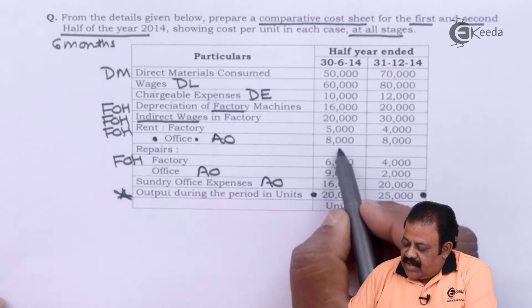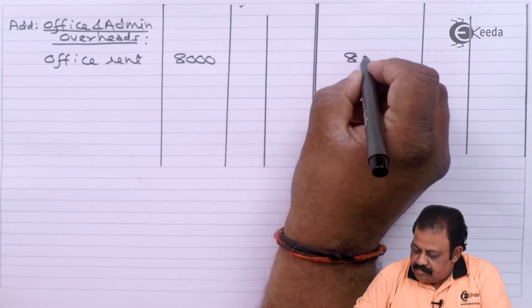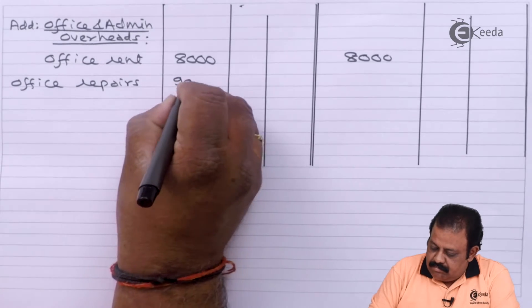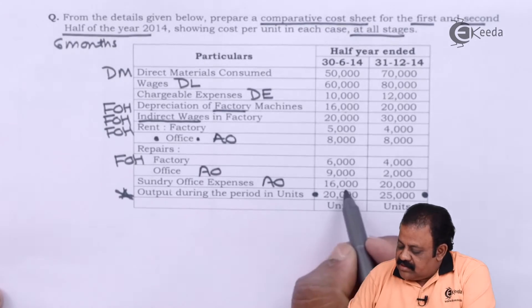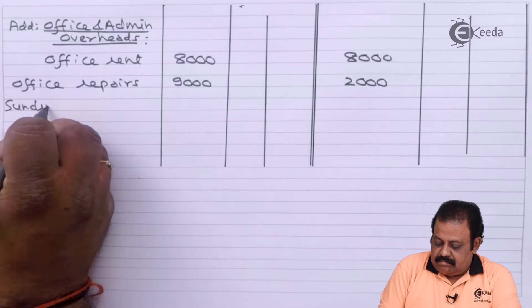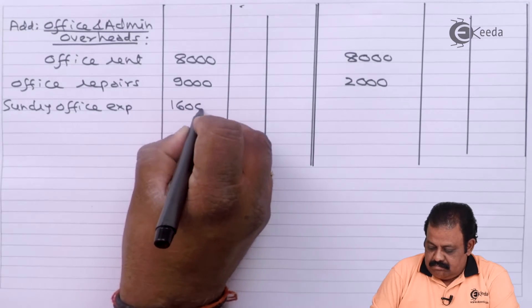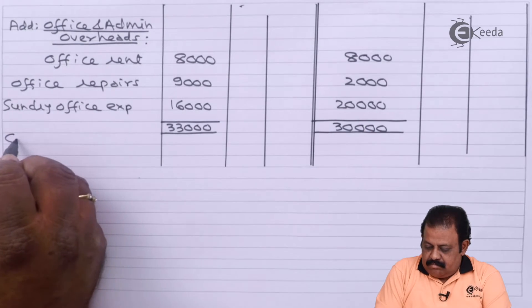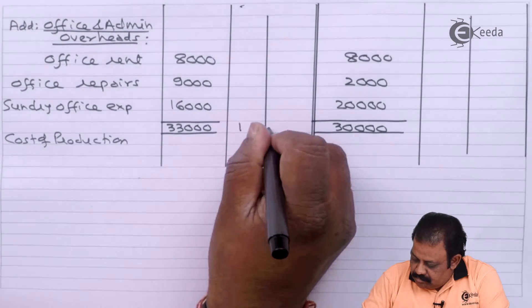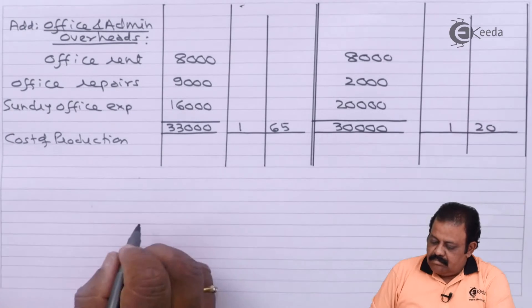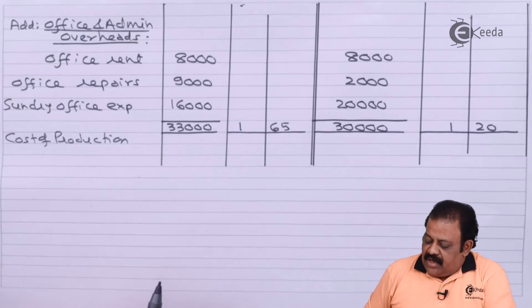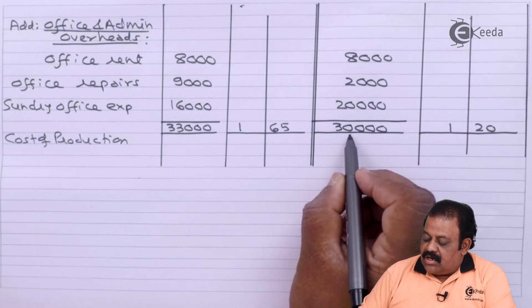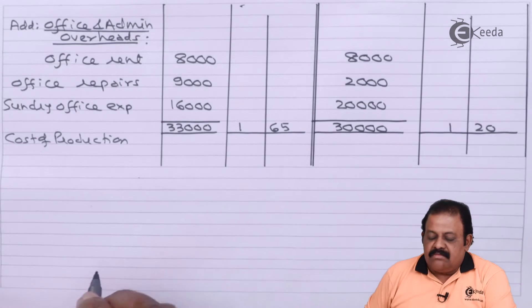Office rent: ₹8,000 each half. Office repairs: first half ₹9,000, second half ₹2,000. Sundry office expenses: first half ₹16,000, second half ₹20,000. Total office expenses in the first half: ₹33,000 at ₹1.65 per unit. In the second half, total office overheads have gone down to ₹30,000 at ₹1.20 per unit. We can now arrive at cost of production.